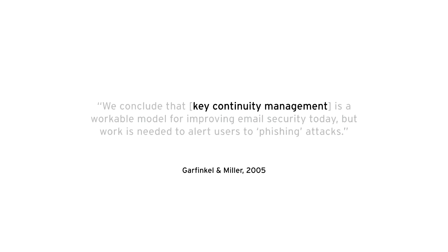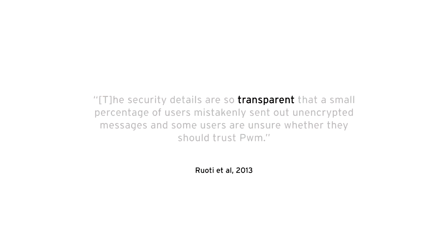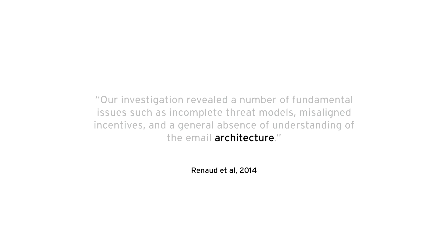In 2002, a lot of the knowledge of usable security design was concretized in 10 key principles. A solution to the PGP problem was proposed in 2004 and tested in 2005. It was found that if we automate encryption and automate key exchange, things are pretty workable — except users still fall for phishing attacks. But last year, another research identified that making security transparent is all nice and well, but it's also dangerous, because users are less likely to trust the system and less likely to understand what's really happening.